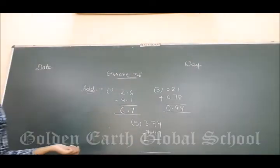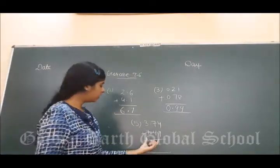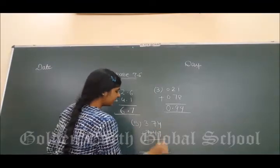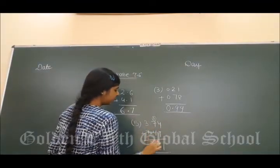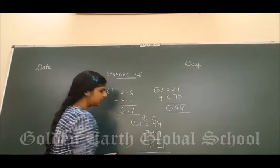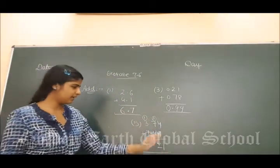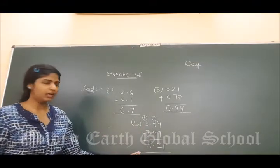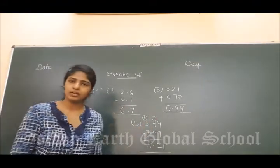Now, fifth part: 3.74 and 7.47. 7 plus 4 is 11, 7 plus 1 is 8, 8 plus 4 is 12, 2 plus 1 is 4, 4 plus 7 is 11. Simply, decimal ke right wale jo addition hai, solve karo, either wale ko add. The answer you got will be your final answer.